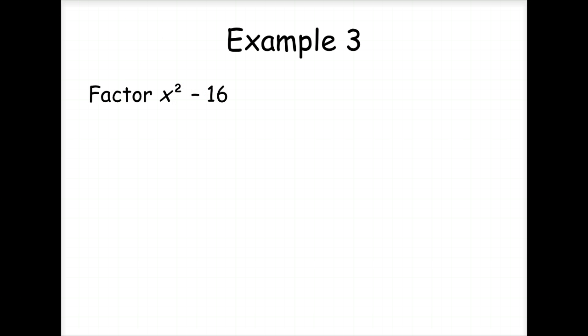Again, we have a difference of perfect squares. So we need an x plus 4 and an x minus 4 in order to not have a middle term.